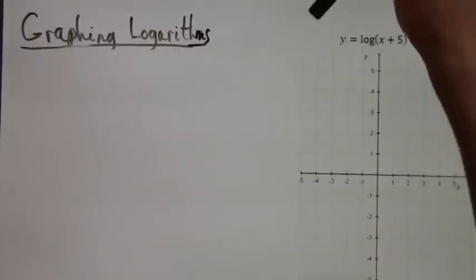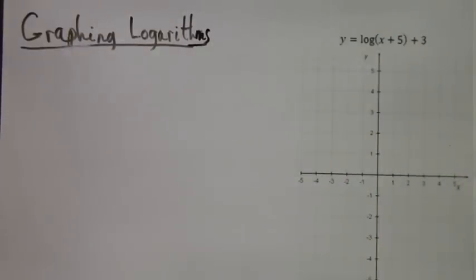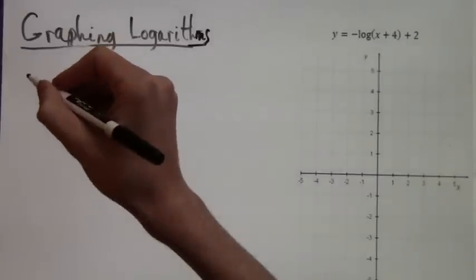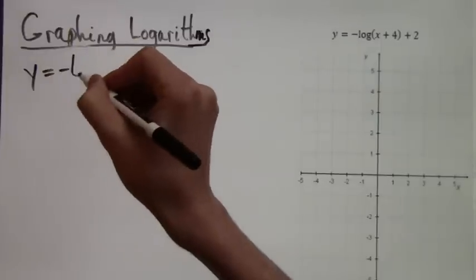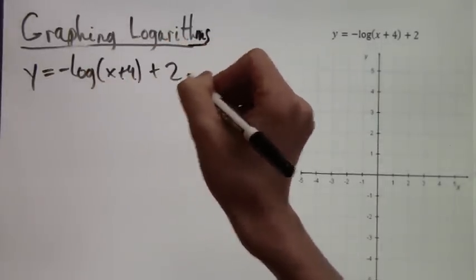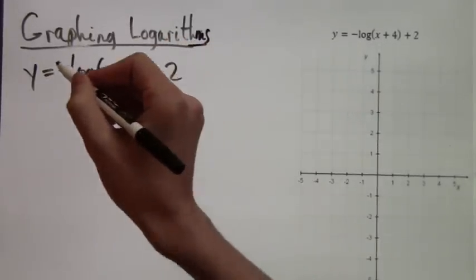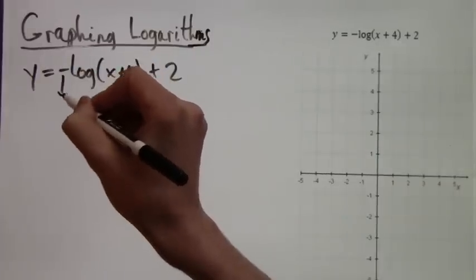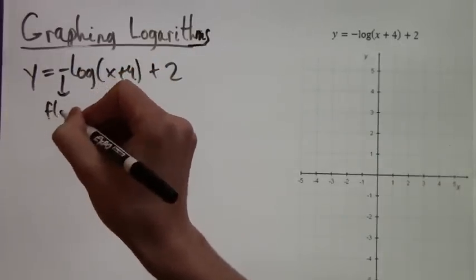Let's do one more example just to make sure that we got everything down. We have negative log of (x plus 4) plus 2. Now we have two shifts and we also have another thing to deal with—that is the negative sign. The negative sign causes the graph to flip.